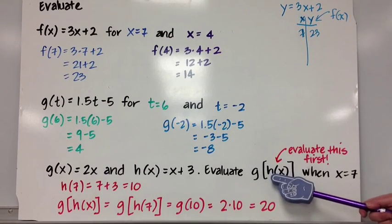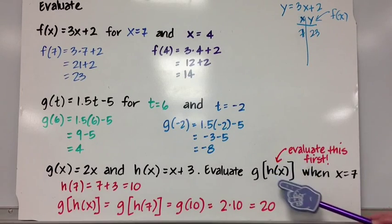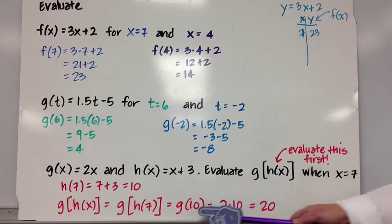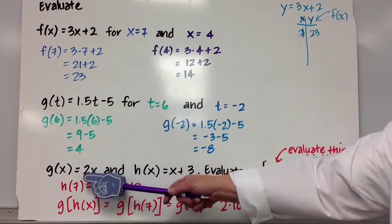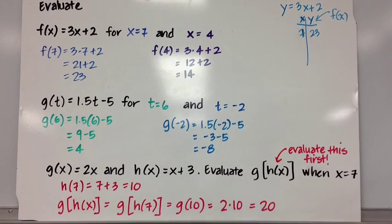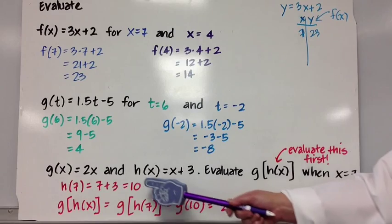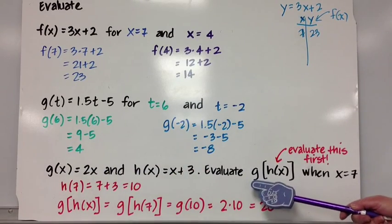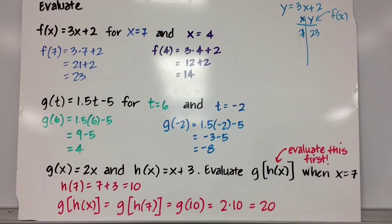So g(h(x)) is going to be g(h(7)), which is what we just did, which is actually g(10). g(h(x)) is g(10) because h(7) = 10. And g(10) = 2 times 10 = 20. So g(h(x)) when x = 7 is 20. We need both functions, h(x) and g(x), to evaluate g(h(x)). Think about that one for a while.